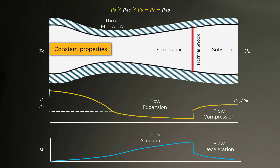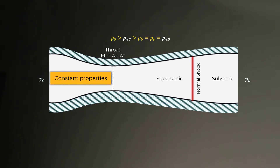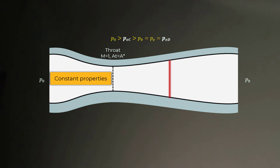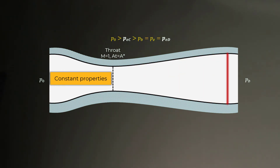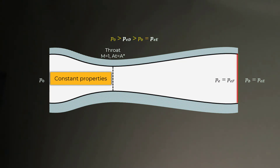If the value of PED is closer to PEC, the normal shock is located closer to the throat of the nozzle. If PED is decreased, the shock wave moves downstream and closer to the nozzle exit. At a certain value of back pressure, the shock sits exactly at the nozzle exit. At this condition, the nozzle exit pressure and back pressure become distinct. The back pressure, say PEE, is the static pressure behind the normal shock at the design Mach number of the nozzle.